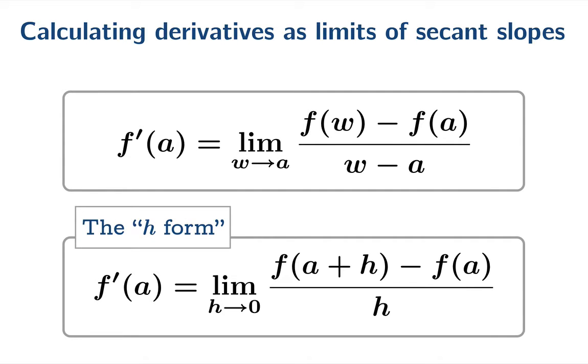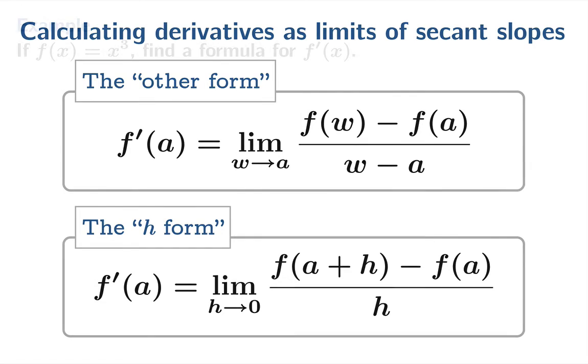And we could call this second version the h-form, and I don't know a better name for this I'm just gonna call this the other form. So the h-form and the other form are the two sort of standard ways to calculate a derivative from scratch as a limiting value of secant slopes.